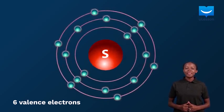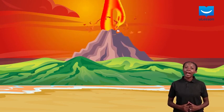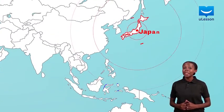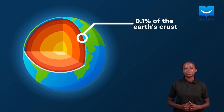Before we conclude this lesson, let's discuss briefly the occurrence of sulfur. Unlike some elements which can only be found naturally in their combined states, sulfur can be found naturally in both its elemental and combined form. For example, elemental sulfur can be found in volcanic regions around the world. In fact, in countries like Japan and Indonesia, sulfur is mined from volcanic deposits. It is also known that sulfur constitutes about 0.1% of the Earth's crust.